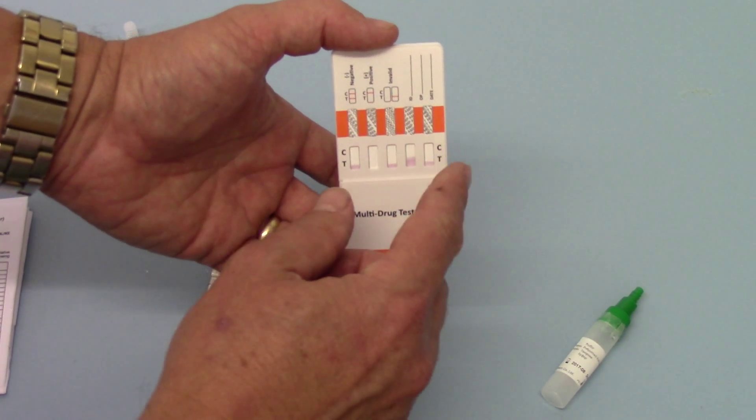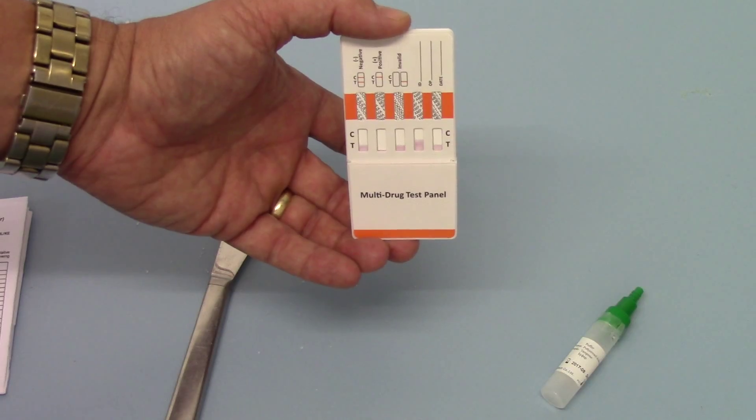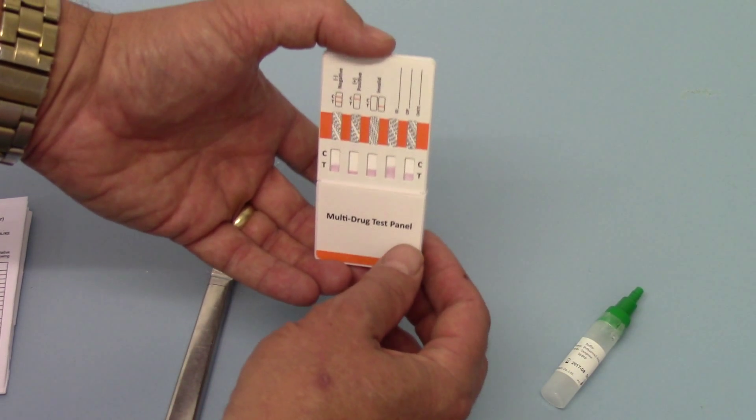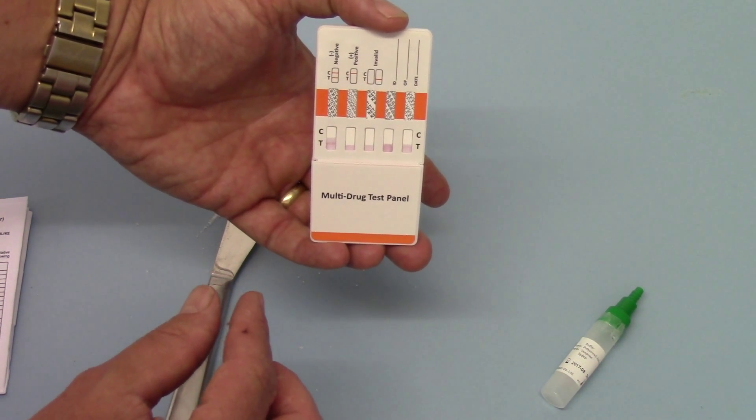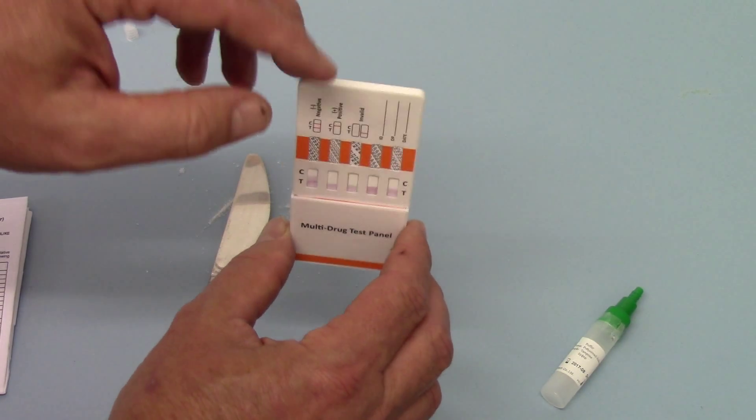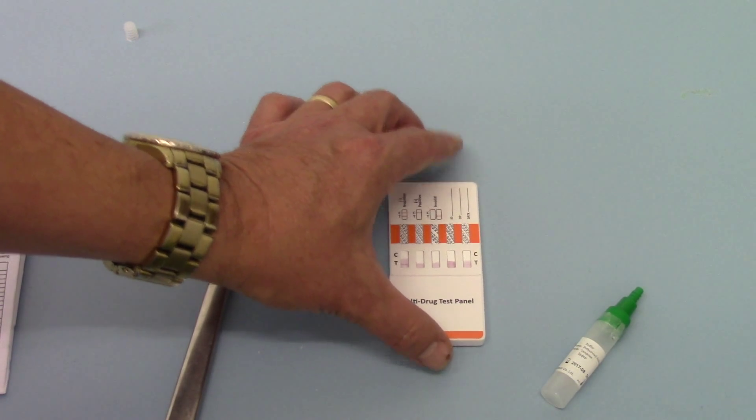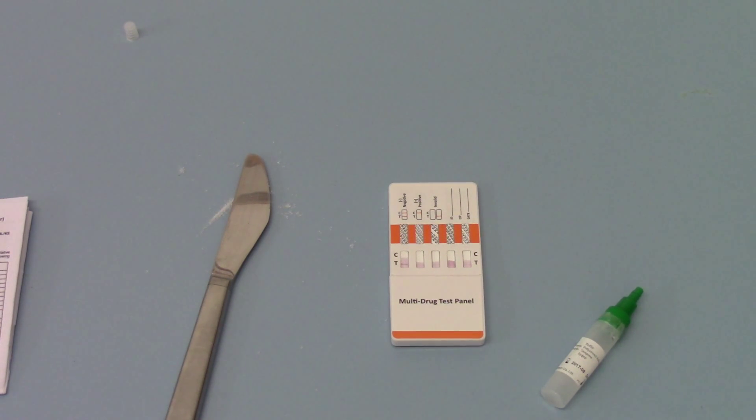And you'll see the membranes starting to go pink here as the drug tests are on both sides. You should see at this stage, the test can be placed flat on a dry non-absorbent surface.